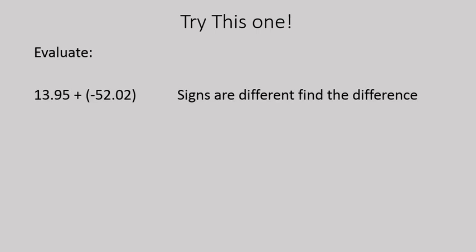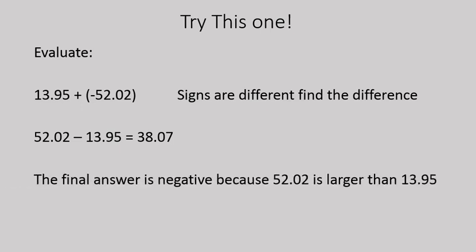13.95 plus negative 52.02. You can pause the recording and try this one on your own. Because the signs are different, we're going to find the difference between these two numbers. 52.02 minus 13.95 gives us 38.07. We know our final answer is negative because there are more negatives than positives — there are 52.02 negatives and only 13.95 positives — so our final answer is negative 38.07.